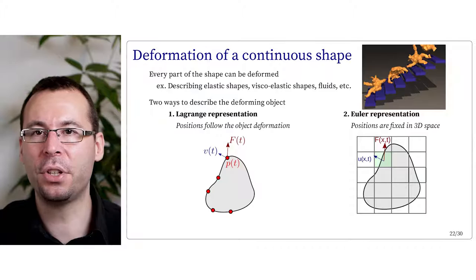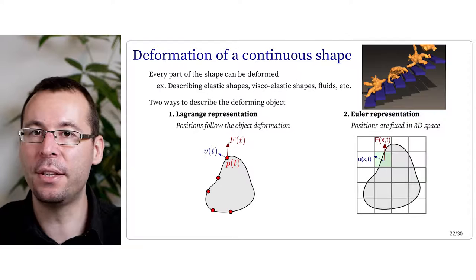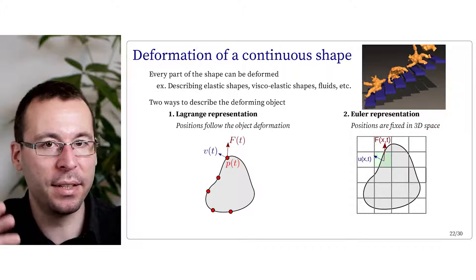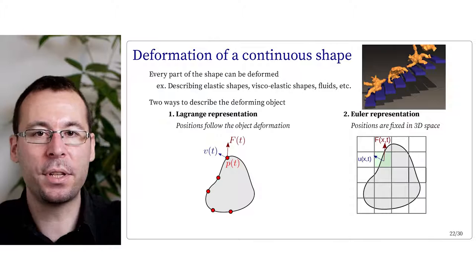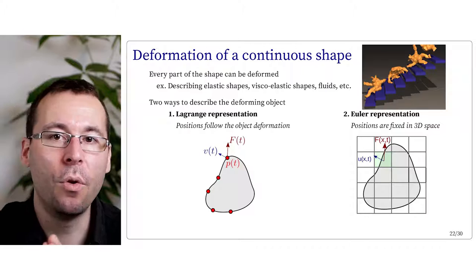So there is another representation called the Euler representation. In Euler representation, we don't track a specific point attached to the shape, but we look at a fixed point in 3D space and observe what is the apparent velocity and apparent forces. The shape is evolved as a density which is advected along the velocity field defined in space. This representation is more adapted for elements such as fluids that are uniformly defined in space and can undergo very complex deformations.